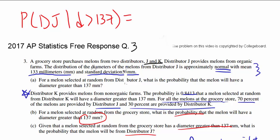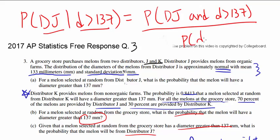So we want to find distributor J given that the diameter is more than 137. Since we got something given something, we know this equals the probability of DJ and the diameter more than 137 divided by probability of diameter more than 137.